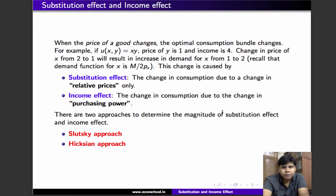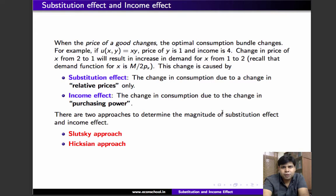For example, if the utility function is Cobb-Douglas, u(x,y) equals xy, price of y is 1, income is 4, and suppose the price of x falls from 2 to 1. We know that the demand function for x is m divided by 2px. So we can easily see that the demand for x as a result of the change in price is going to increase from one unit of consumption of x to two units of consumption of x.